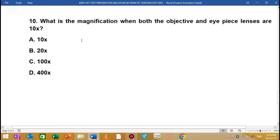MCQ number 10: What is the magnification when both the objective and eyepiece lens are 10x? When both are 10x, you multiply them - 10x times 10x equals 100x magnification.